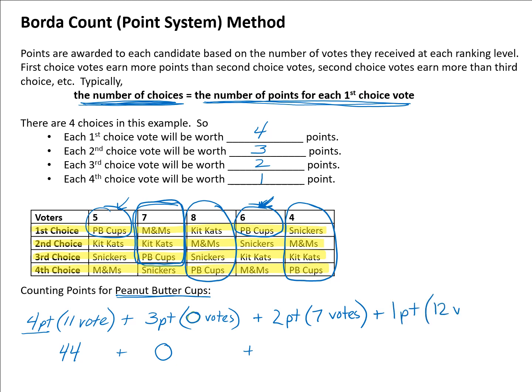That's one point for each of those twelve fourth choice votes. Adding everything up: 44 points for first choice, zero for second choice, 14 points for third choice (two times seven), and 12 points for fourth choice (one times twelve). Together, 44 + 0 + 14 + 12 gives 70 points total for Peanut Butter Cups.